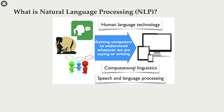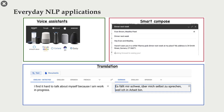You might also hear people referring to this field as human language technology, or speech and language processing. Now there are some differences between these fields, but all of them have a large overlap and they tend to use the same methods. Here I'm showing you some everyday applications of natural language processing: Voice Assistant, Smart Compose, Semantic Search, and Translation are all examples of natural language processing applications.